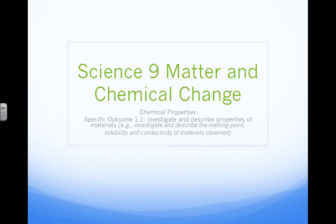Mr. Sonnenberg here. This is Science 9, the unit matter and chemical change. We're talking today about general outcome number one — classifying substances based on their properties and composition. Today we're going to talk about specific outcome 1.1: we're going to investigate and describe properties of materials. We talked in our last screencast about physical properties, and today we're going to talk about chemical properties.